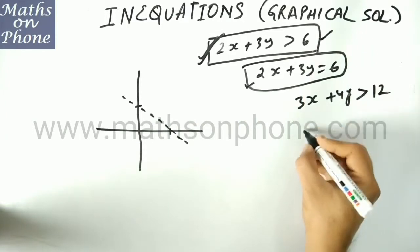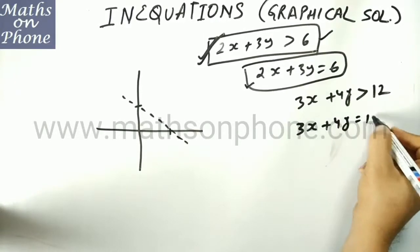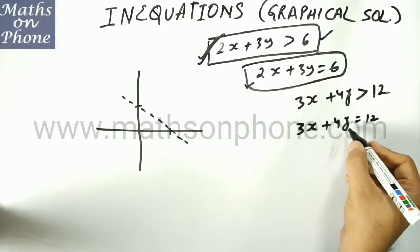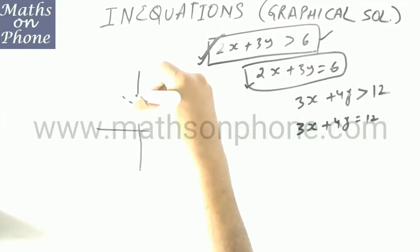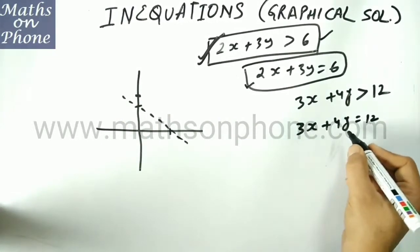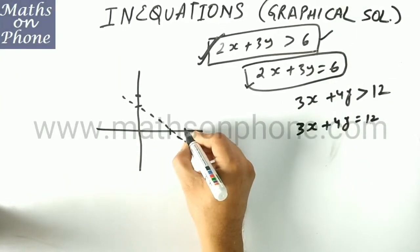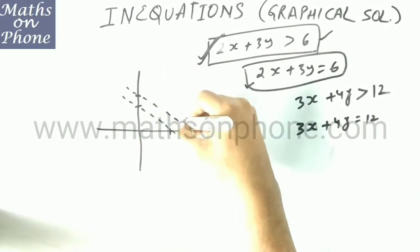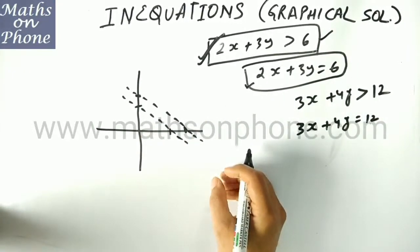For the second line, I need to write the corresponding equation as 3x plus 4y equal to 12. Same method you follow: when you put x equal to 0, y comes out to be 3 — mark it here. When you put y equal to 0, the value of x comes out to be 4. Again, it is just greater, not with equal to sign, so again a dotted line. Now you are conversant with how to draw a line on a graph — that is very simple.